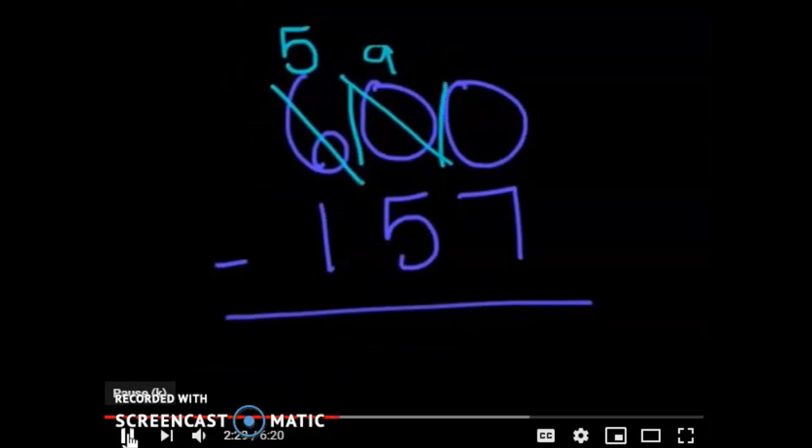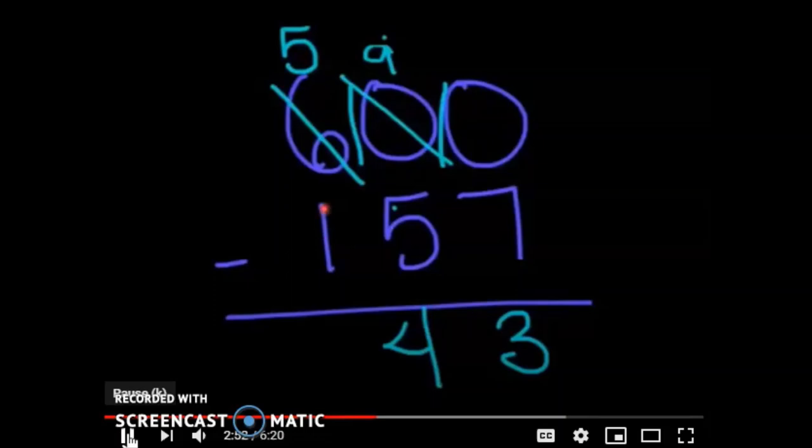So now I have 10. So now, can I go ahead and do my 10 minus 7 or 10 subtract 7? Yes. So what is 10 subtract 7? It should be 3. Can I take 9 minus 5? 9 subtract 5 would be 4. And then can I take 5 and subtract my 1? Right here. It would be 4. So my answer is going to be 443.